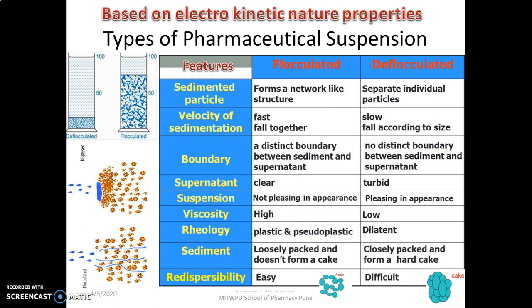Based on the electro-kinetic nature of properties, you must understand the electro-kinetic potential in order to make a stable suspension. In flocculated suspension, particles form a network-like structure. The particles are dispersed uniformly throughout that biphasic system. The settling velocity of these particles is very high in case of flocculated suspension, and when you apply shear stress it will again re-disperse and come back to the original state — that's the property of flocculating agents.